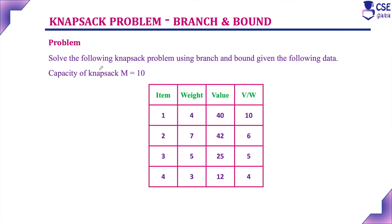The problem is: solve the following knapsack problem using branch and bound technique. Given the following data, the capacity of the knapsack is 10. They have given 4 items with their corresponding weight and value. We need to find the value-by-weight ratio and order it in decreasing order. But already in the problem itself, they have given this value-by-weight ratio in decreasing order only.